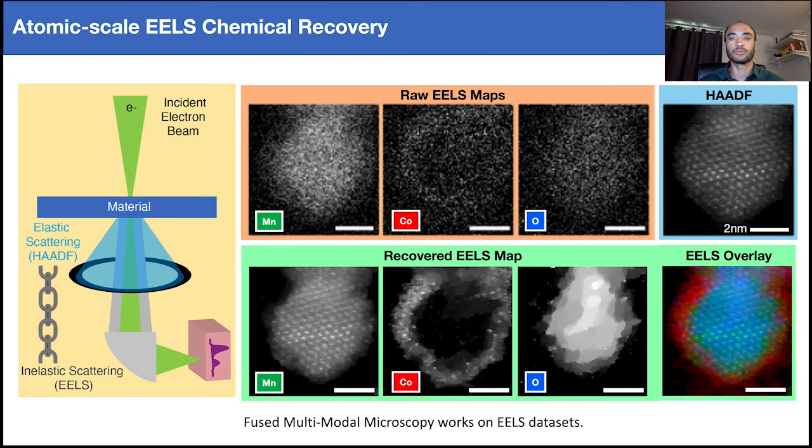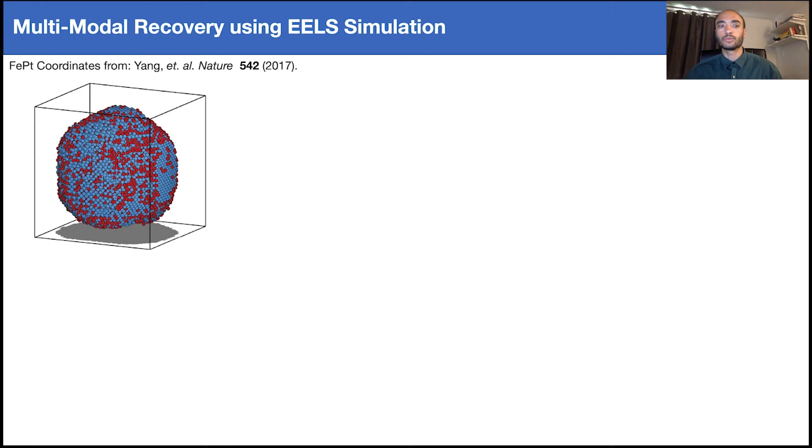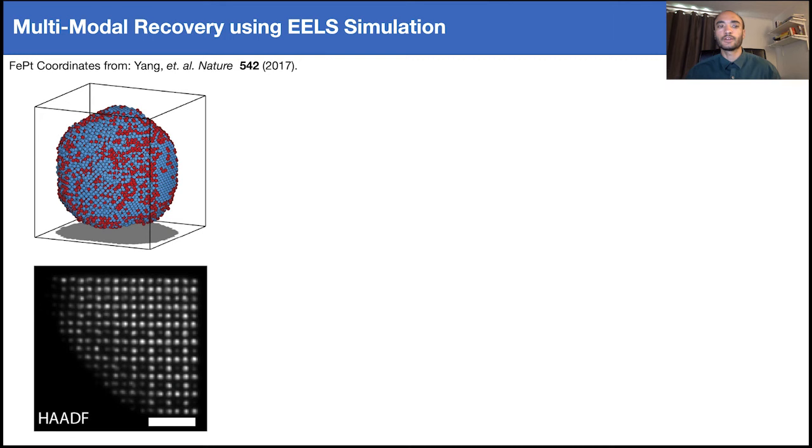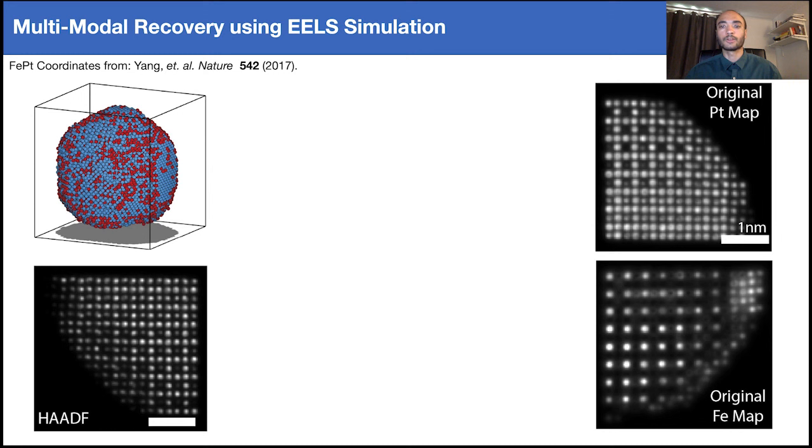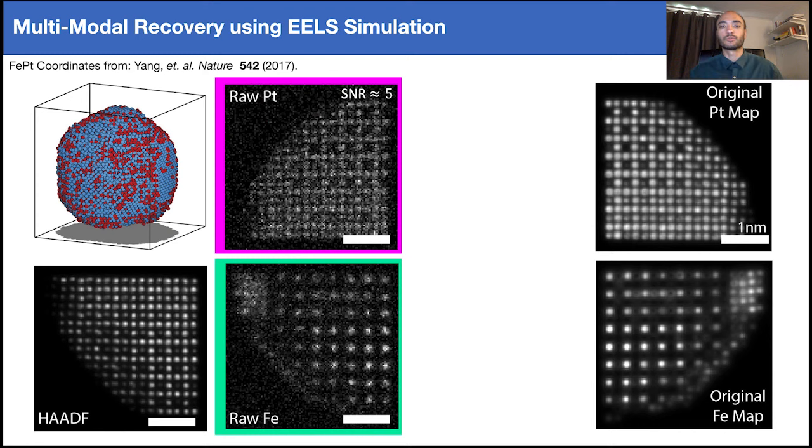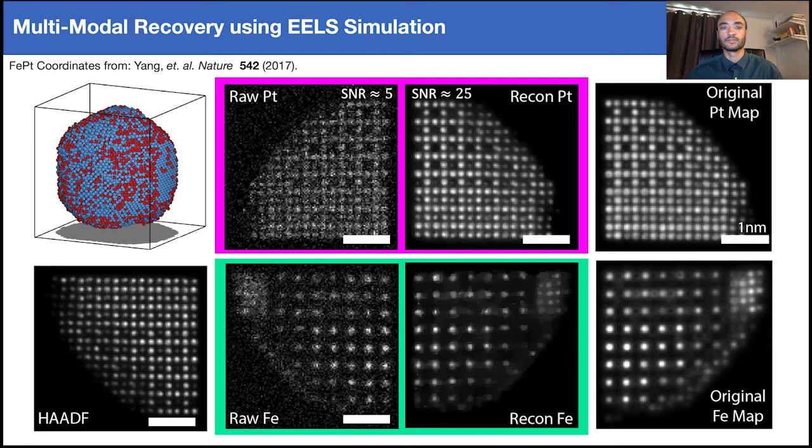To confirm our multimodal model successfully captured specimen structure at atomic length scales, we simulated HAADF and EELS images on an 8-nanometer iron-platinum nanoparticle, whose coordinates were obtained experimentally by Yang and collaborators. These simulations provide a ground truth to assess the algorithm's performance at atomic resolution. We degraded the maps with Poisson noise under realistic experimental conditions, and see the reconstructions are qualitatively consistent and unaffected by the nonlinearities associated from zone axis imaging.